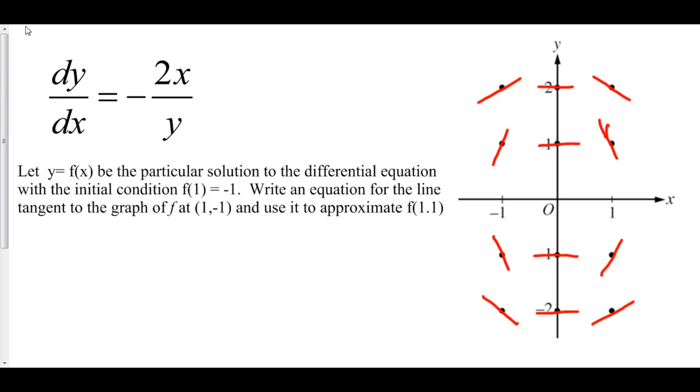Now that we have a slope field for our particular differential equation, negative 2x over y, let's answer some questions that might be asked in a math class. Let y equals f of x be the particular solution to the differential equation with the initial condition f of 1 equals negative 1. Write an equation for the line tangent to the graph of f at (1, -1) and use it to approximate f of 1.1.